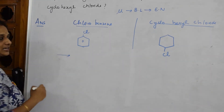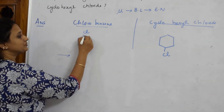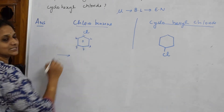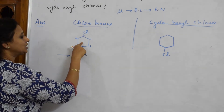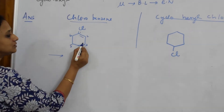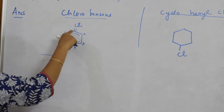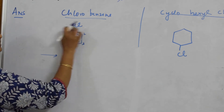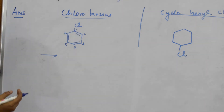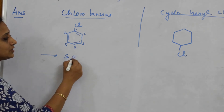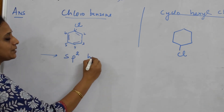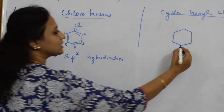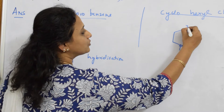Start your answer by writing the structure. For chlorobenzene, number the carbons one through six. There are alternating pi bonds at positions one-two, three-four, and five-six. Because of these double bonds, carbon C1 and the chlorine attached to it have sp2 hybridization.